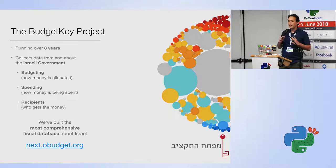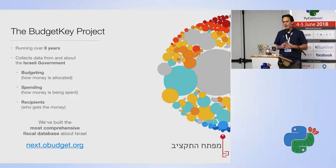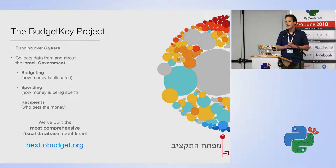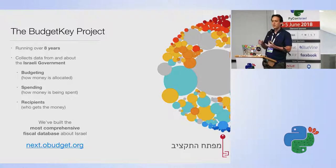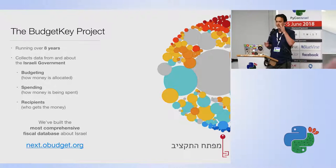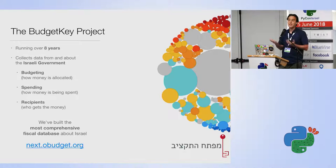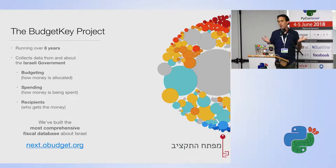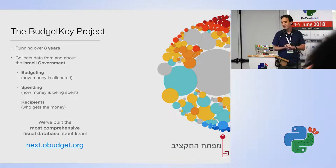At the Public Knowledge Workshop I've been working mostly on a project called the Budget Key. It's been running for about eight years. It collects public data from the Israeli government about budgeting — how the government creates and decides on the national budget, how it modifies it, how it spends money, how it gives money to associations, companies, people, and municipalities, and how that money flows. It also covers recipients — who gets the money and how those organizations are connected to officials in the government. After all these years we currently have the most comprehensive database about government money in Israel.